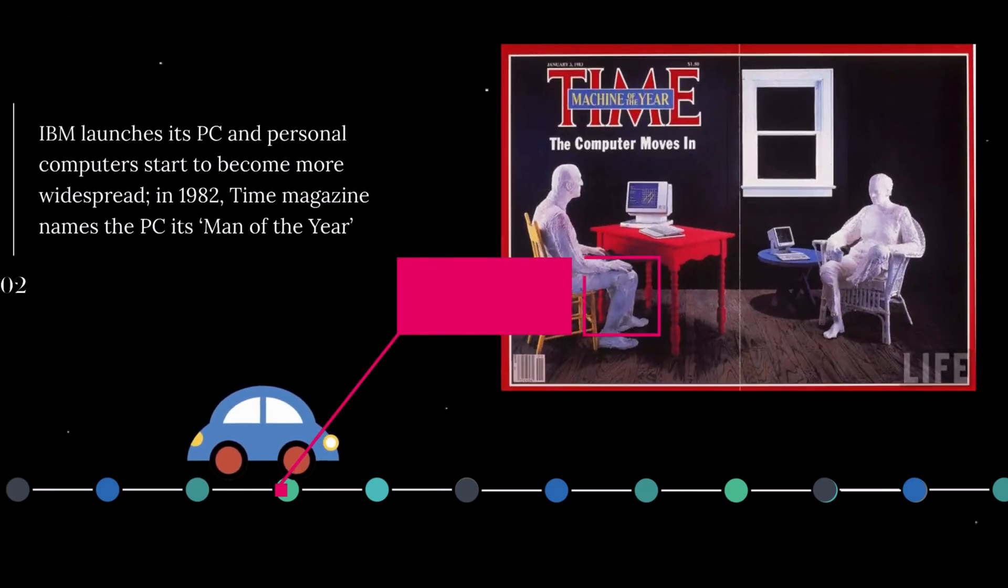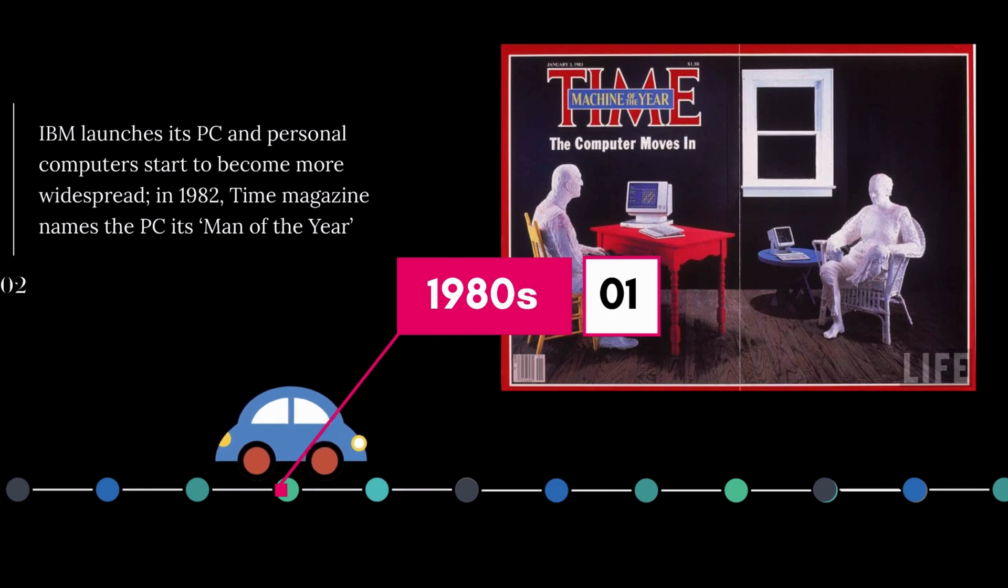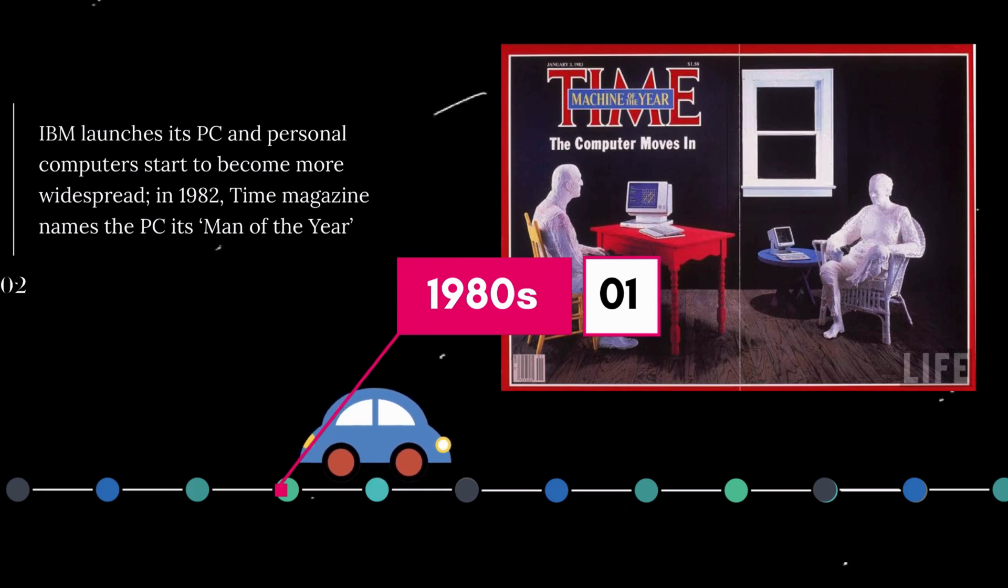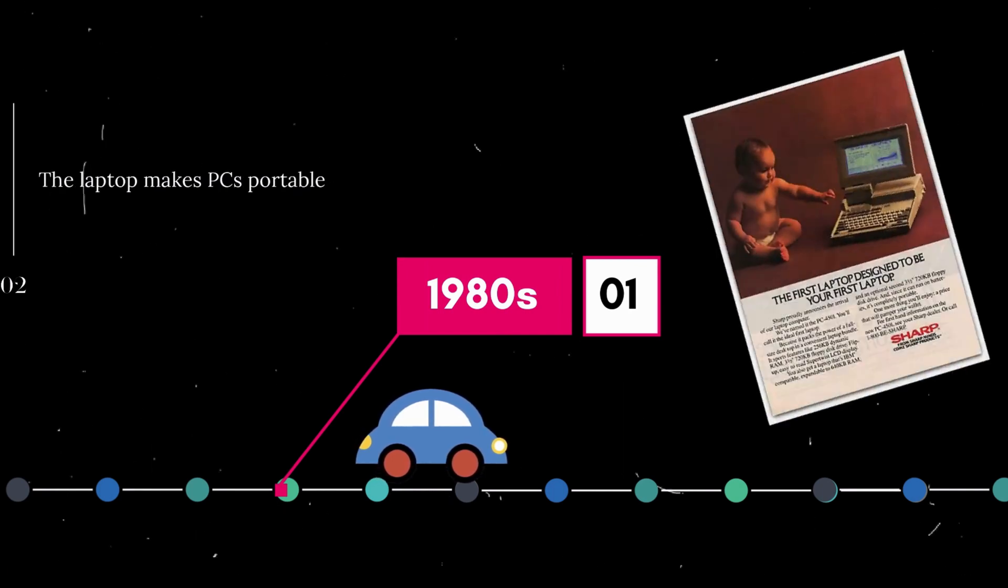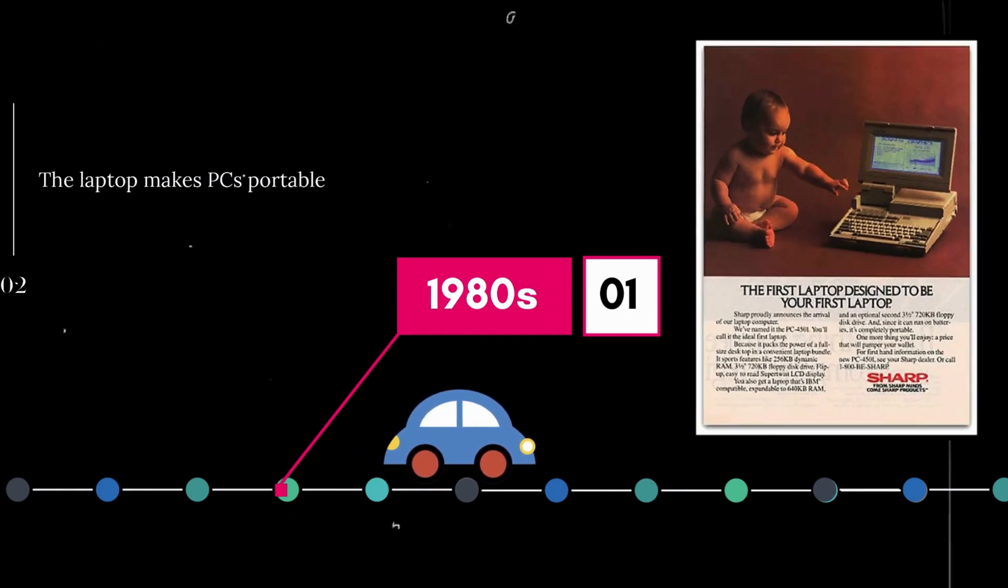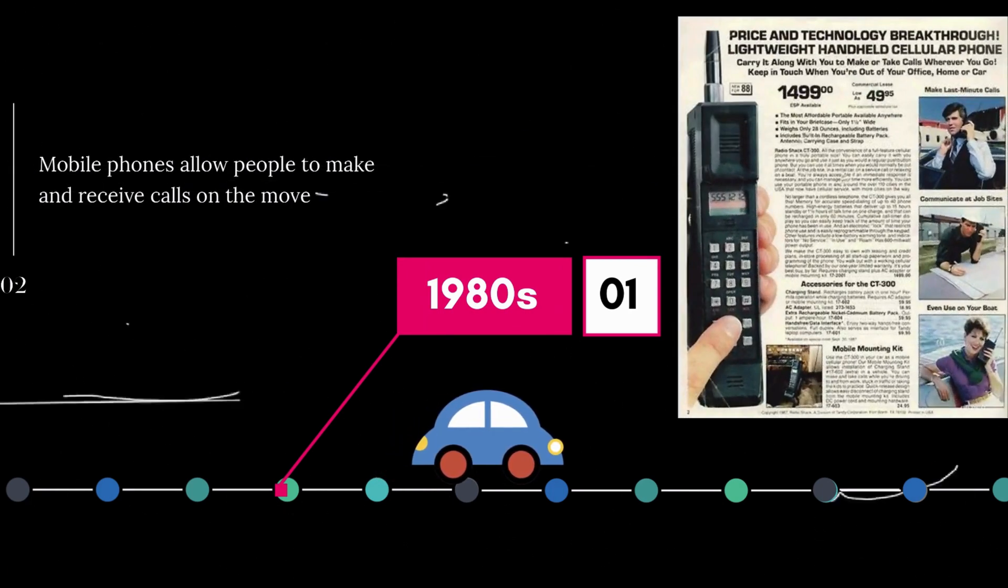1980s. IBM launches its PC, and personal computers start to become more widespread. In 1982, Time magazine names the PC its man-of-the-year. Laser printers make office printing quicker and easier. The laptop makes PCs portable. Mobile phones allow people to make and receive calls on the move. Tim Berners-Lee invents the World Wide Web.